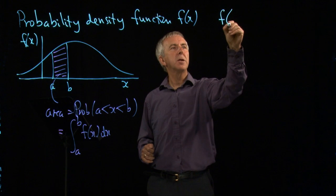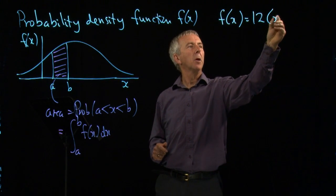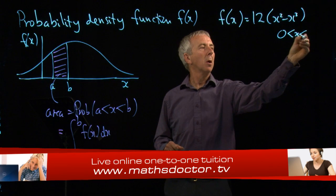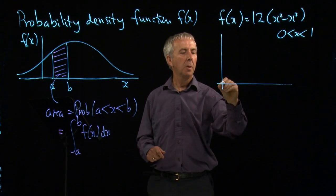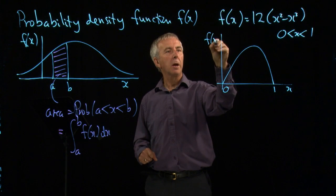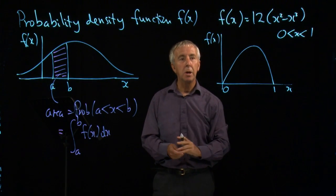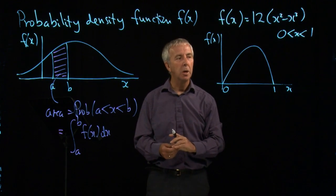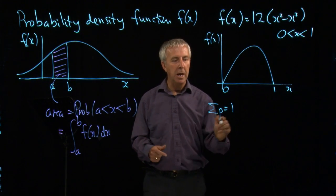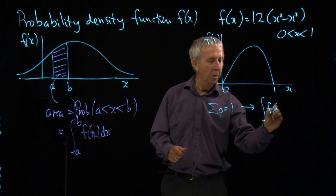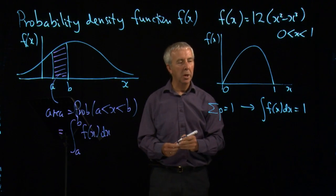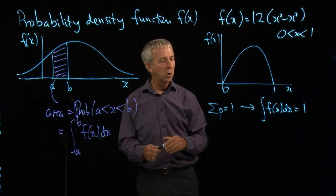If we take a density function f(x) equals 12 times x squared minus x cubed, where x now is restricted to 0 to 1, this has a graph looking a bit like this. So we need to check that the area underneath the graph, the total area, is 1, because just like the total of all the probabilities added up to 1 before, we had to have sigma p equals 1. We now replace that by the idea that the integral of f(x)dx has to equal 1 over whatever range we're working in, in this case 0 to 1.